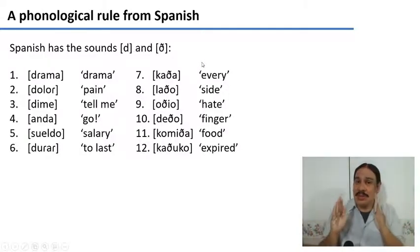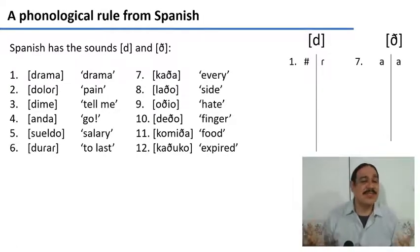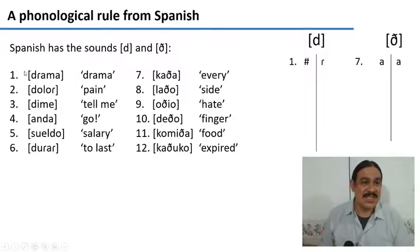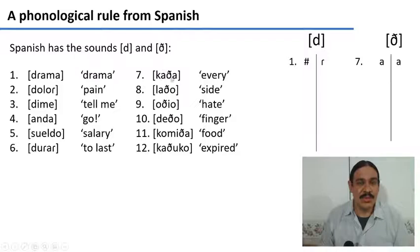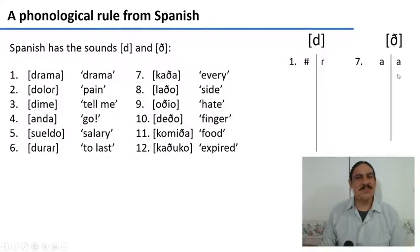Spoiler alert: they're part of the same phoneme. But which phoneme? That's what we need to decide. The first thing I want you to do is get a piece of paper and try to figure out the environments for the stop and for the fricative. As you can see, the stop occurs in the first word, where it is preceded by the edge of the word and followed by the simple tap 'ra.' The fricative, on the other hand, can be observed in example number seven, where it is preceded by A and followed by A, as in ga. Please take a moment to go through the data and extract all of these environments. Please pause the video.